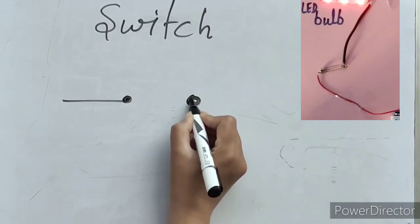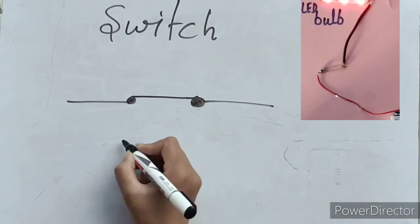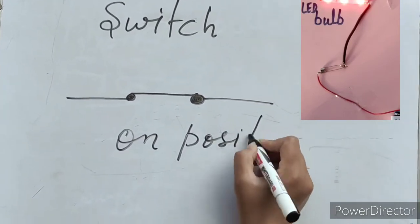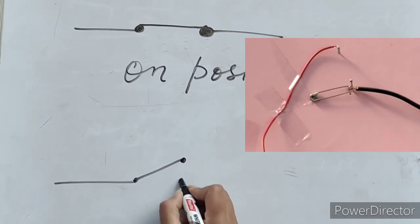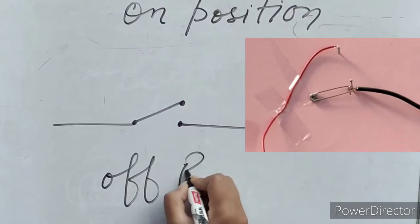This is the symbol of switch. The switch symbol is also in two positions: one is on position, this is the symbol in on position, and this is the symbol of switch when it is in off position.